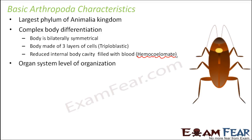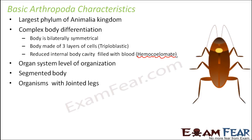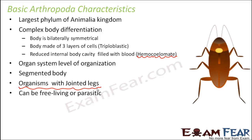Arthropods have organ system level of organization, with distinct organ systems like digestive, excretory, and so on. Their bodies are segmented, though segmentation in arthropods is less prominent than in annelids. The name arthropod means jointed leg. They can be free-living or parasitic, they are mobile, most of them have wings so they can fly, and they also have limbs to walk around.